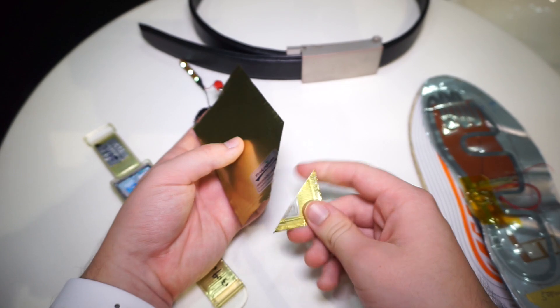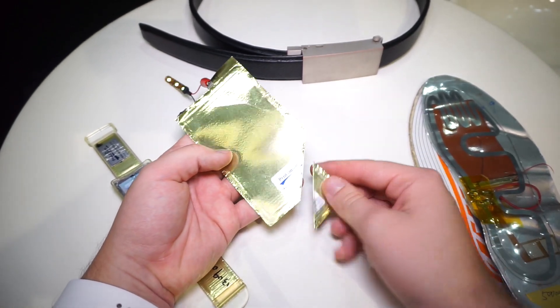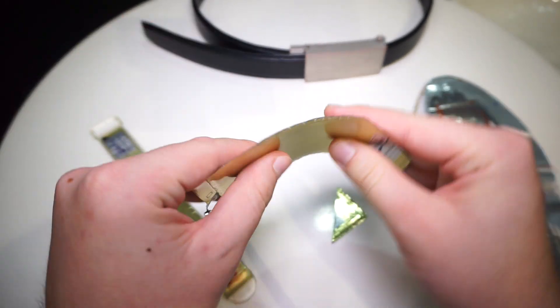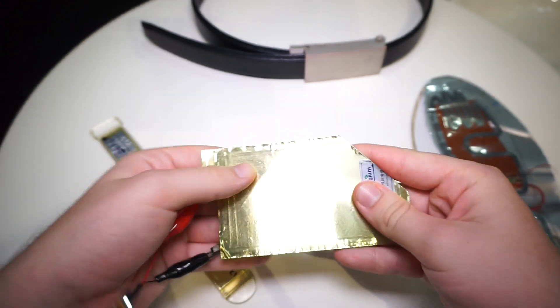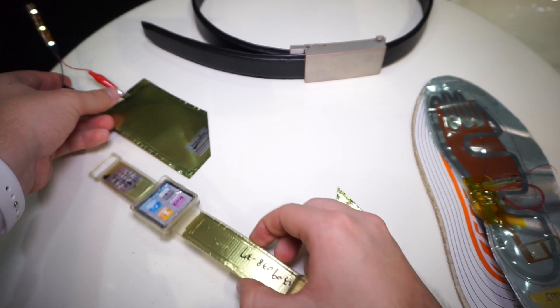What you can also do with this battery is cut off a piece like here, and it will still power on these LEDs or whatever it is powering. As you can see, super flexible, super thin, and you can stack them on top as well to get even more capacity inside.